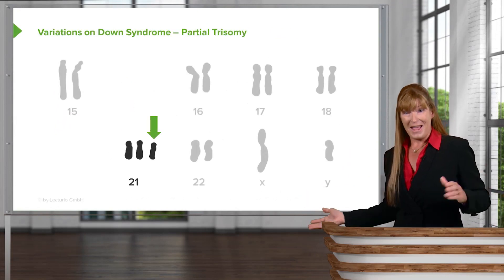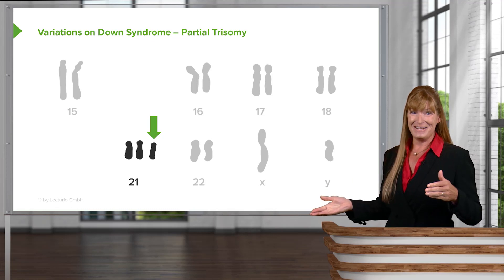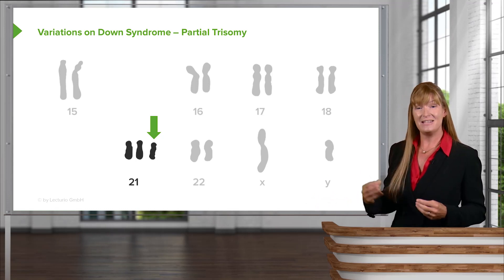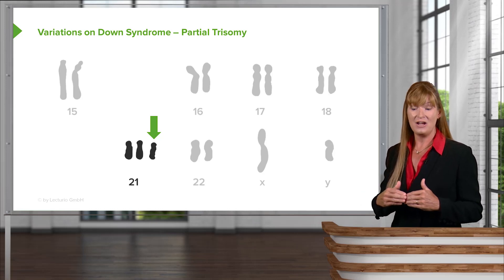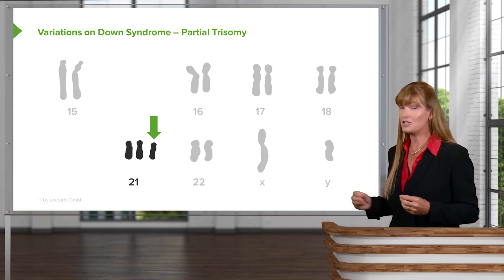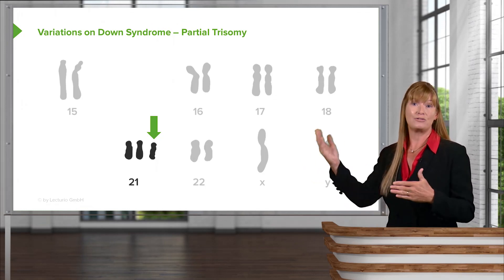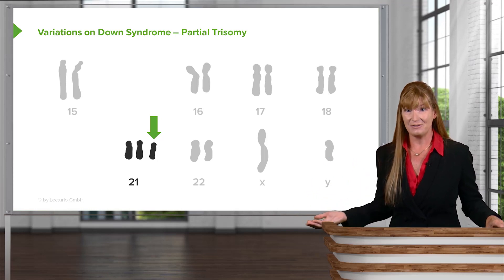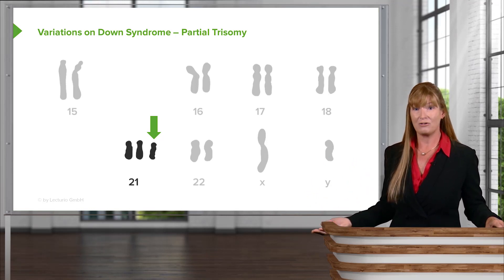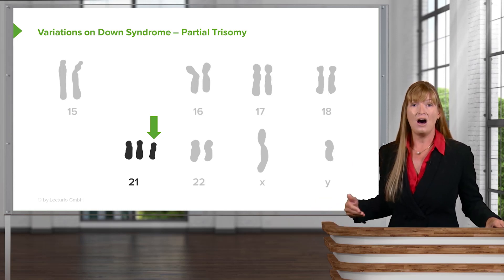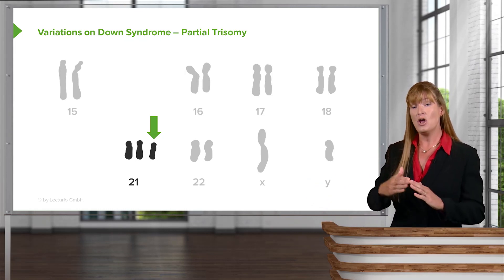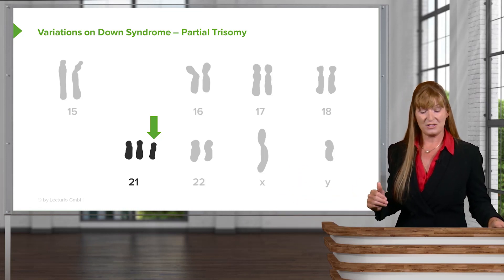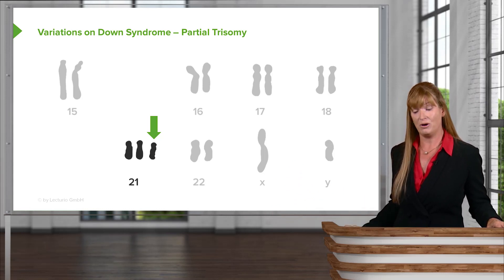Another way we could potentially end up with Down syndrome — not common, fairly uncommon — is a partial trisomy. In this case, we could have a variable expression of Down syndrome because we have a partial additional chromosome 21 rather than three complete chromosome 21s. All of these are examples using Down syndrome that could happen to any number of different chromosomes. You could have partial trisomy of multiple other chromosomes, including ones that are not the classic ones that make it to term, so chromosomes other than 18, 21, and 13 could be viable with partial trisomies.